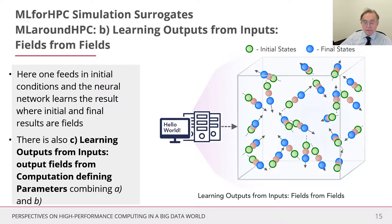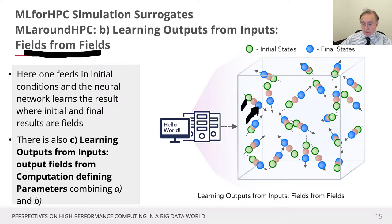Now we have learning outputs from inputs at the field level — fields from fields. The green initial fields are input to our network and the blue final values are the output. This hasn't been done yet and needs to be explored. It's quite non-trivial because of the large number of points in the initial and final state, making it a more challenging problem requiring more training samples and more sensitivity to the neural network architecture.